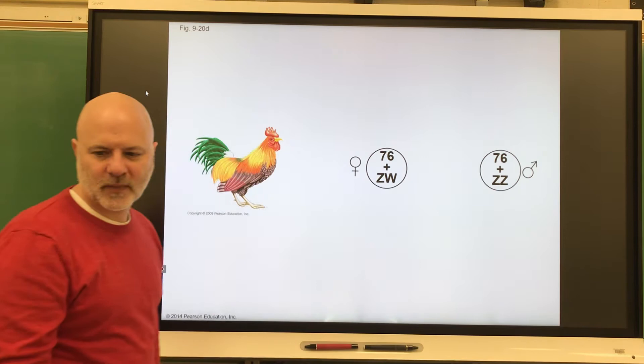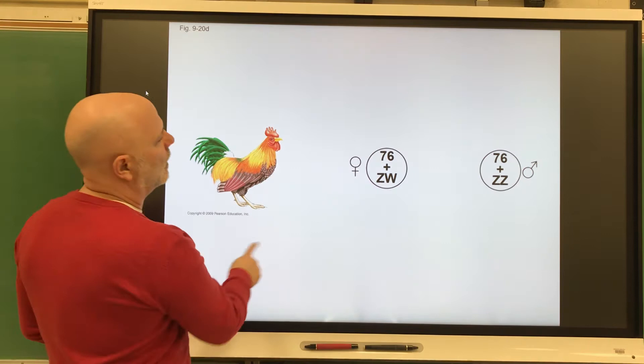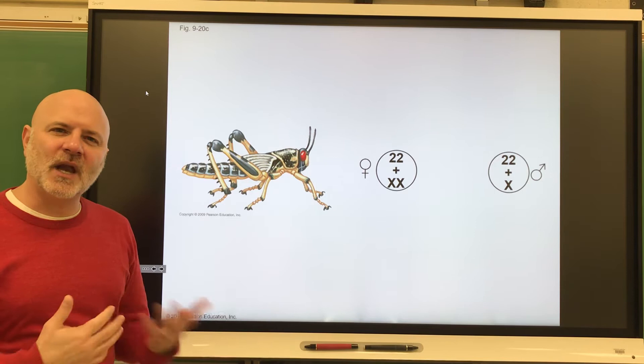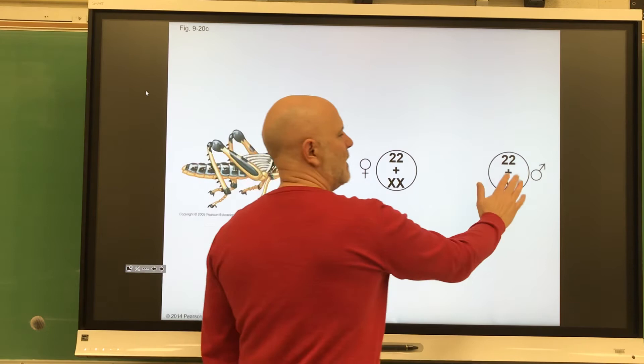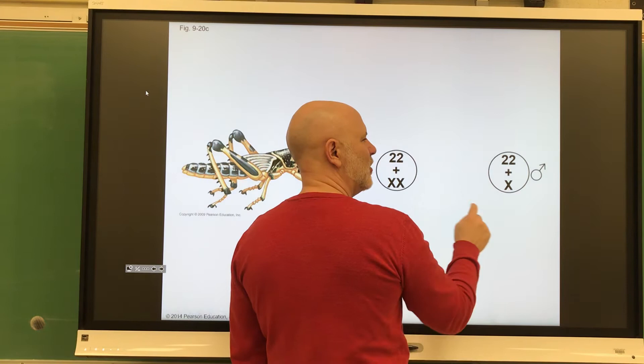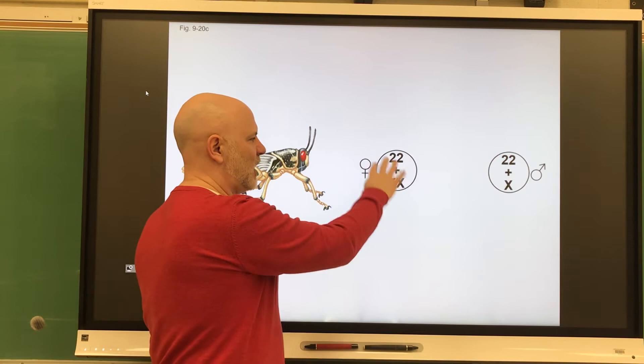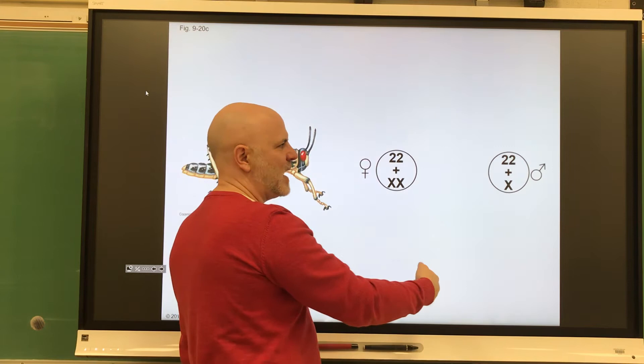Grasshoppers are on a similar kind of situation, but with them, it's really the number of sex chromosomes that determines the sex of the offspring. Females have two sex chromosomes, males have one sex chromosome. In this case, it's still the males that determine the sex of the offspring because he's either going to give off a sex chromosome or not. She's always going to give off an X chromosome. If he gives off a sex chromosome, there will be a female. If he doesn't give off a sex chromosome, the offspring will be male.